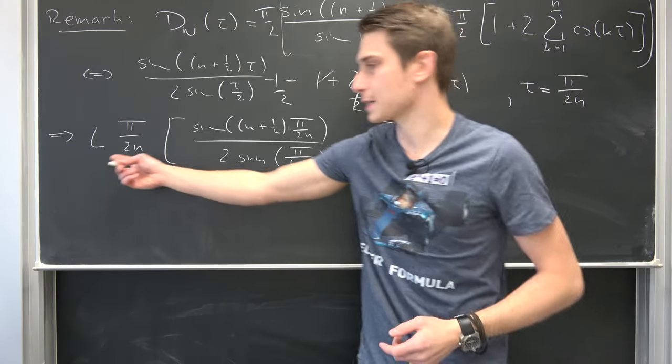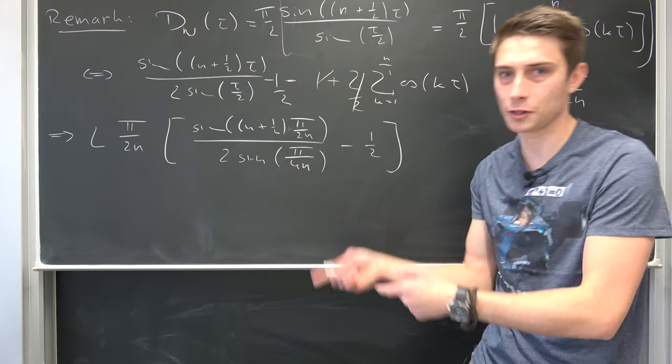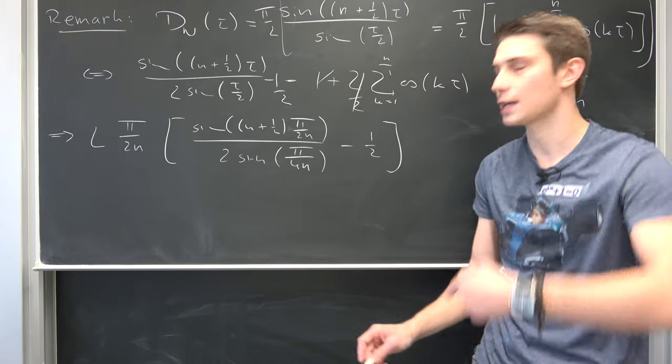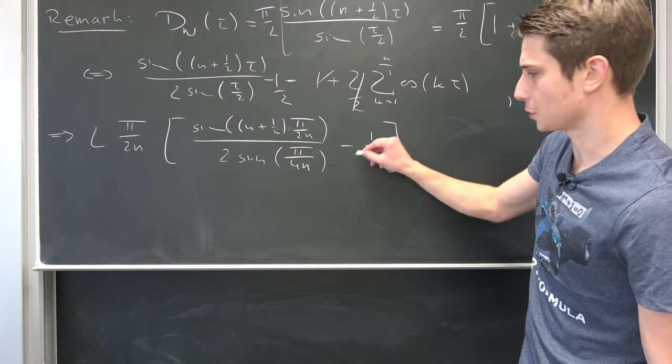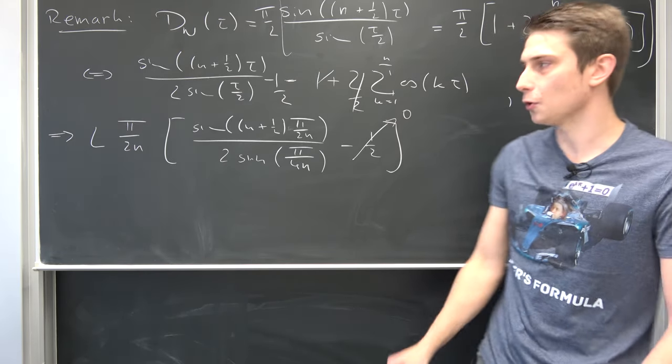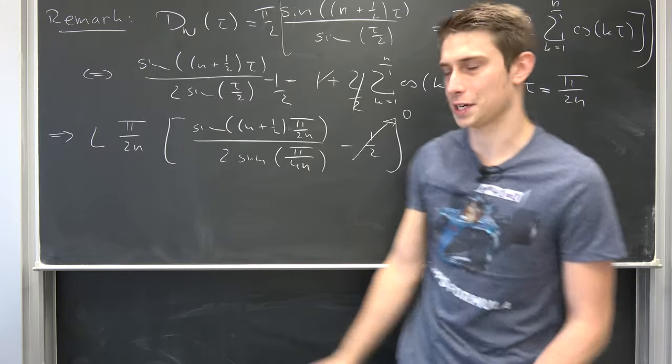But if we take this exact limit, this is just going to be some constant times the limit of 1 over n when n approaches infinity. So in the limit this is going to go to zero. This part really doesn't matter, it doesn't affect us. So all that's really left is to evaluate this part right here.